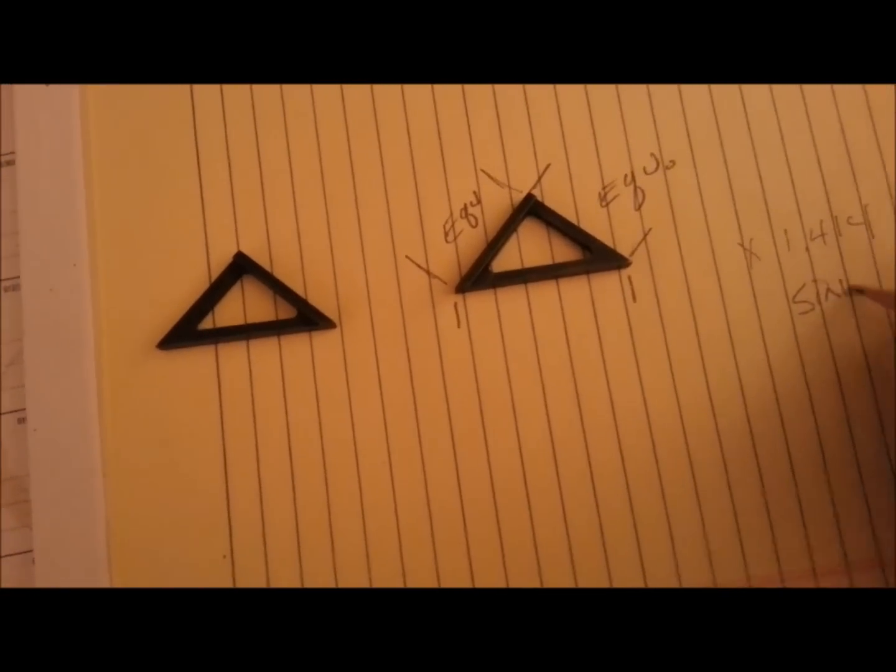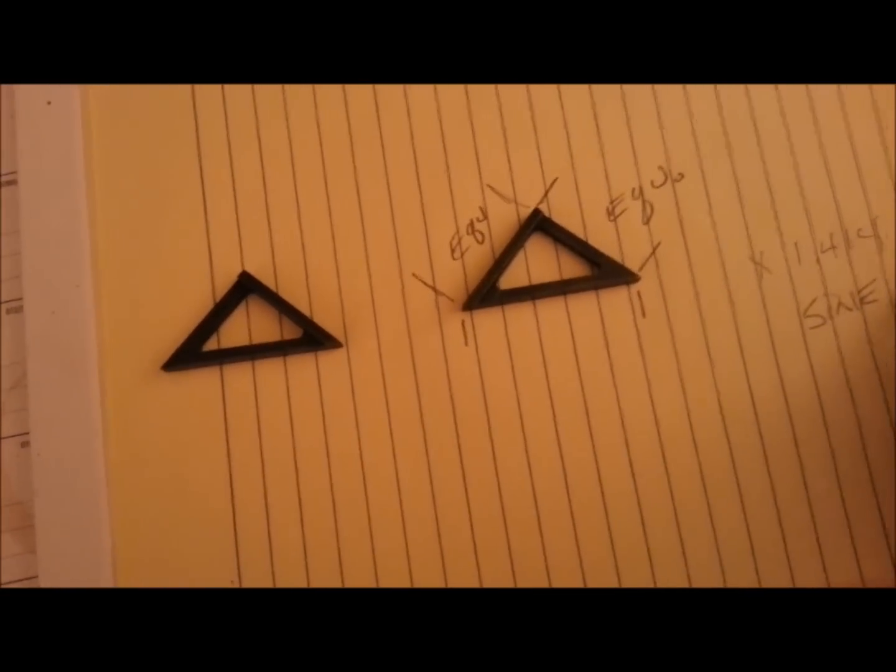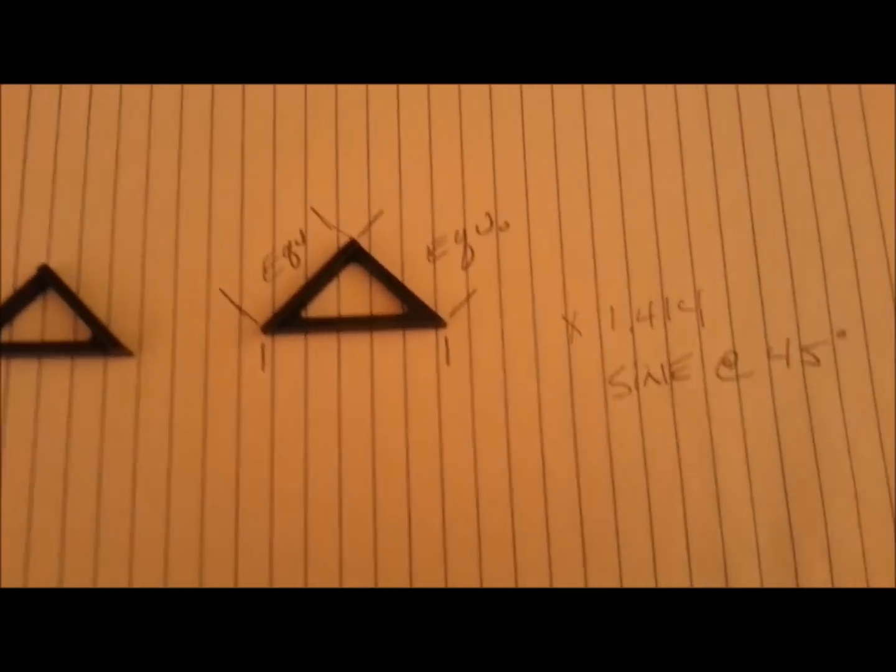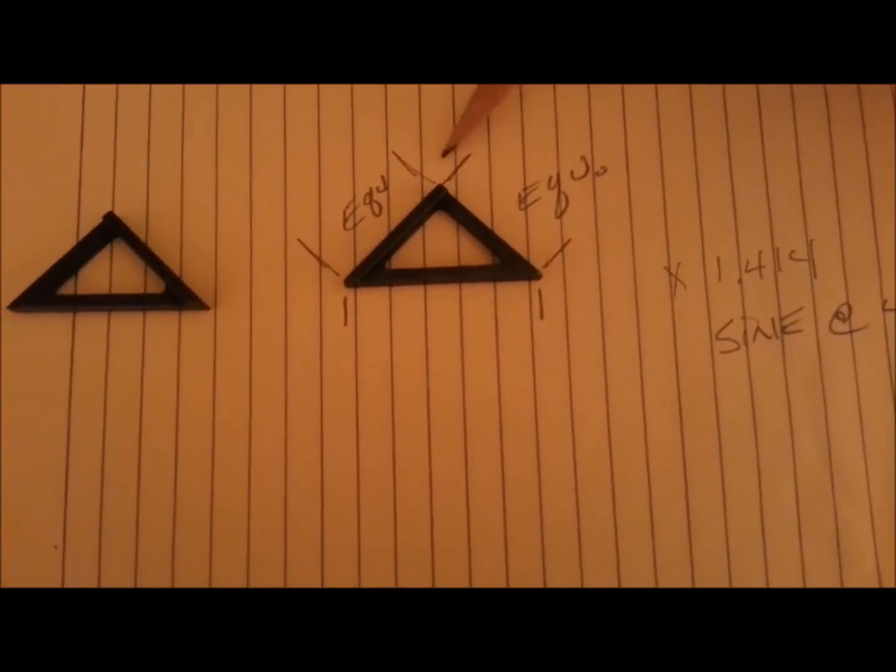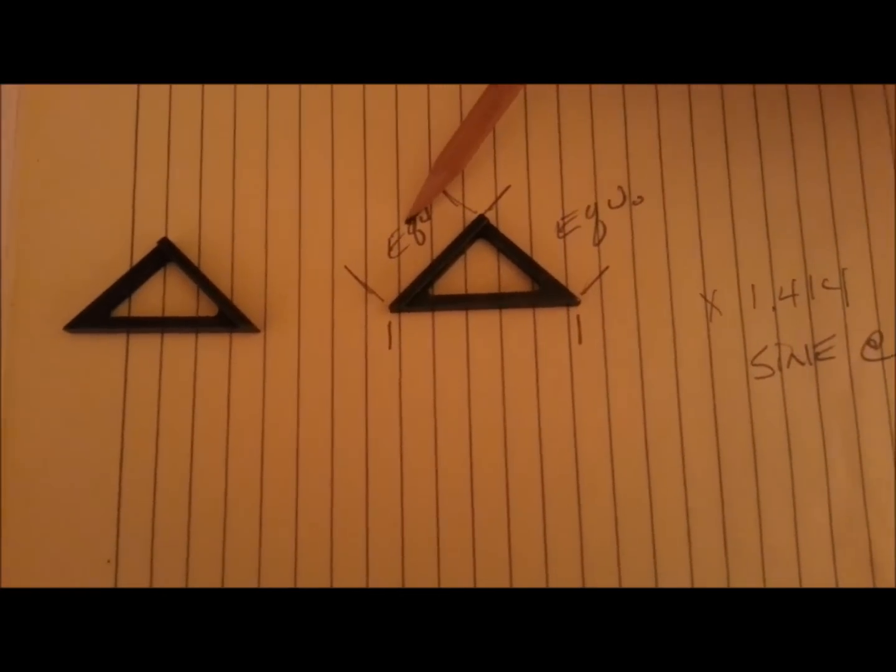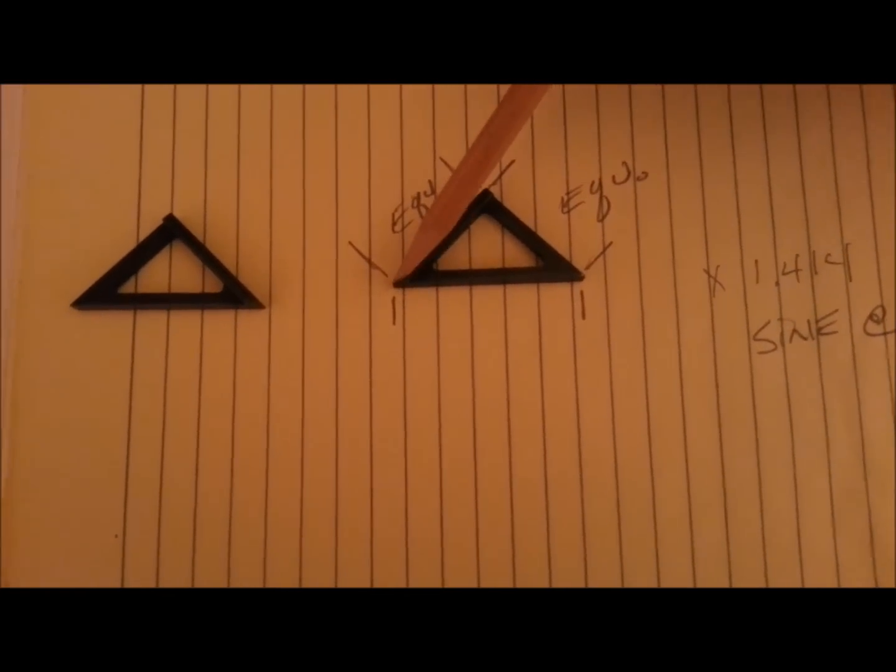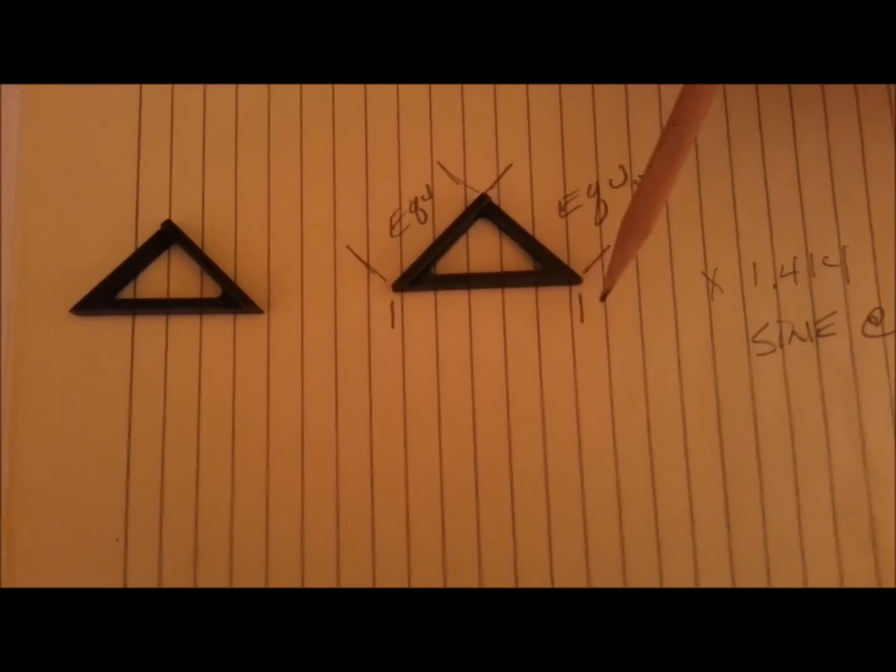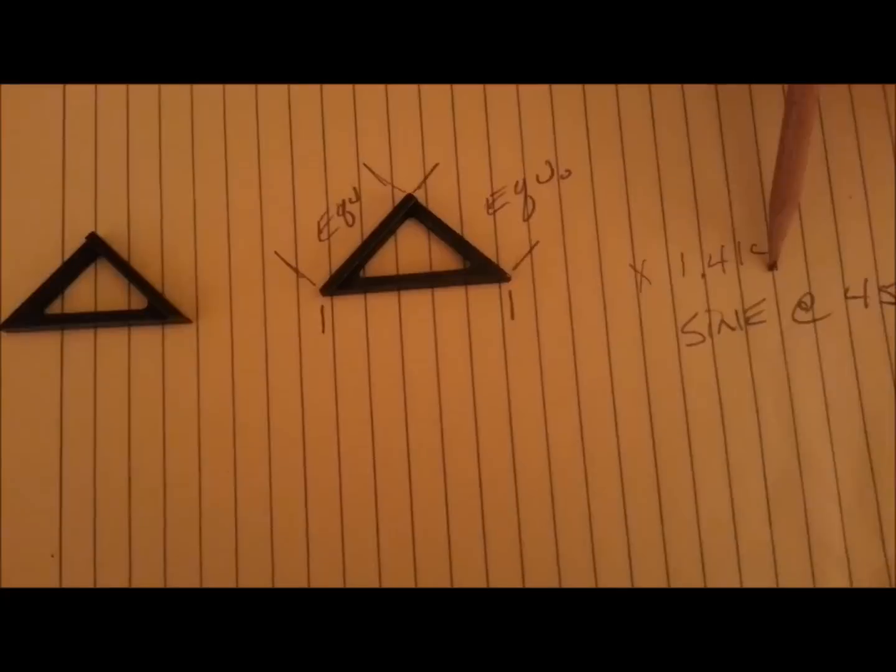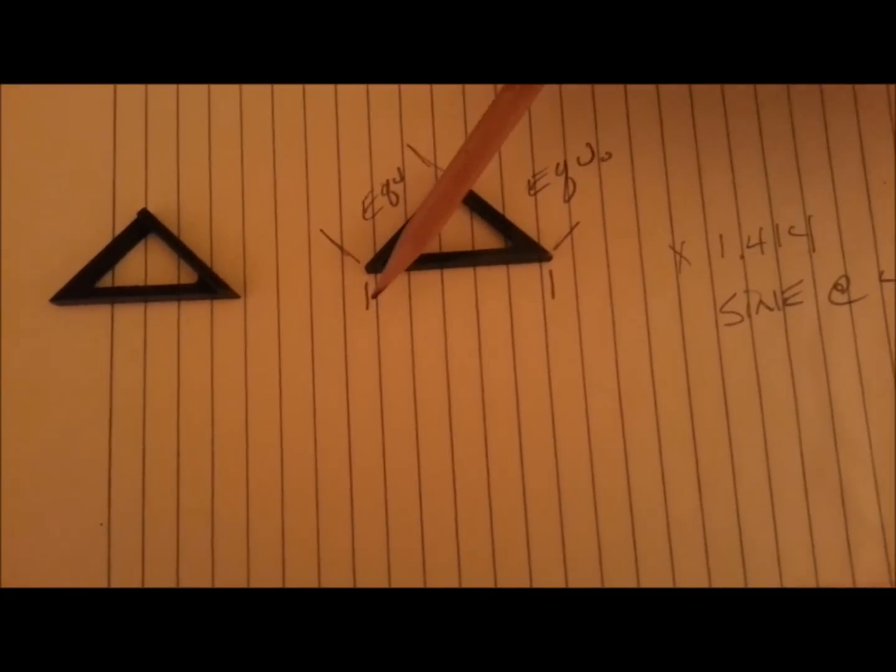It doesn't matter what this distance is as long as it's this distance and this distance is equal. If this measurement here is this dimension times 1.414, if that measures that, then you know you're exactly 45 degrees.